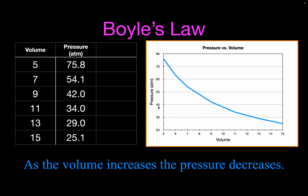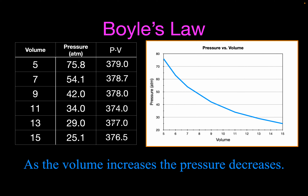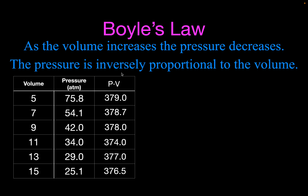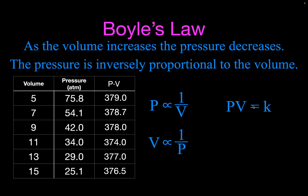Another thing that Boyle noticed was that if you multiply the pressure times the volume for each of those cases, you get a constant. It's not exactly constant based on the measurements I made, but essentially all of these measurements are right around 377 or 378. If there was not a constant, you would see the values change significantly. Mathematically, the relationship is that pressure is inversely proportional to the volume — or pressure is proportional to 1 over the volume. So, pressure times volume equals a constant.